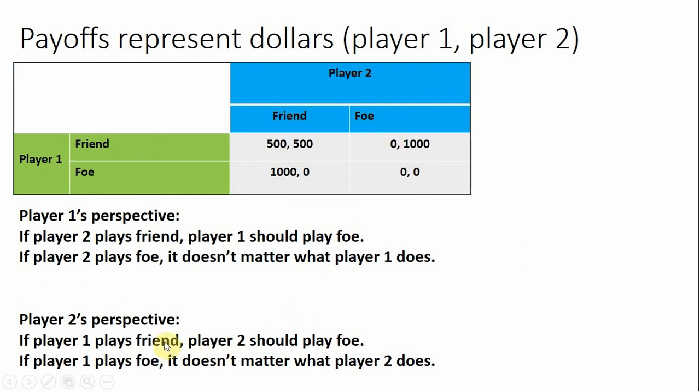So just to walk through it, if player one plays friend, the game would end up in this top row. You're player two, the highest payoff would come from playing the foe strategy, a thousand beats 500. Again, you're player two, you only care about your payoffs, which is recorded by the second number. If you're player two and you now think player one will play foe, you're walking away with no money here. It's zero, zero, both of the second numbers. So here again, we establish a weakly dominant strategy for player two.